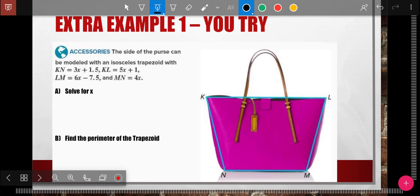All right. Part A of the U-try here. KN is 3X plus 1.5. And then LM is 6X minus 7.5. And so I get 1.5 equals 3X minus 7.5. I get 9 equals 3X. And so I get X equals 3 as my answer.